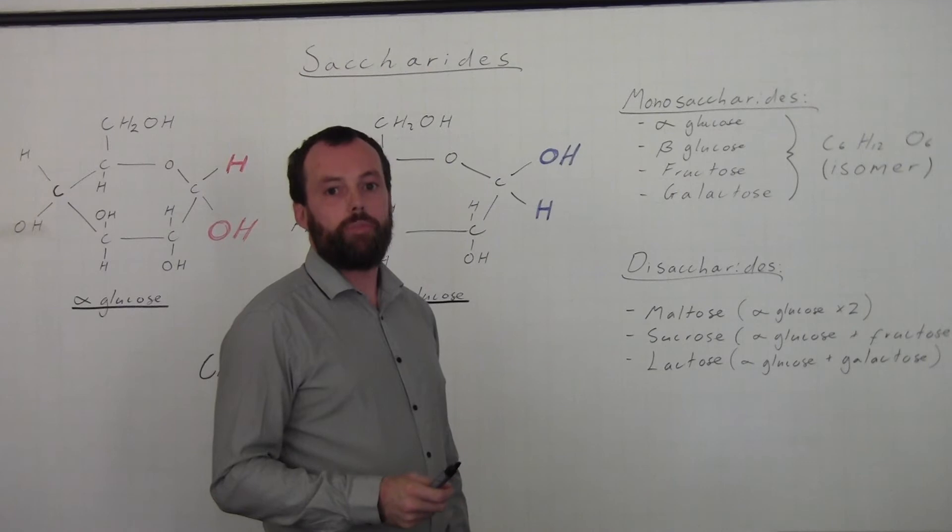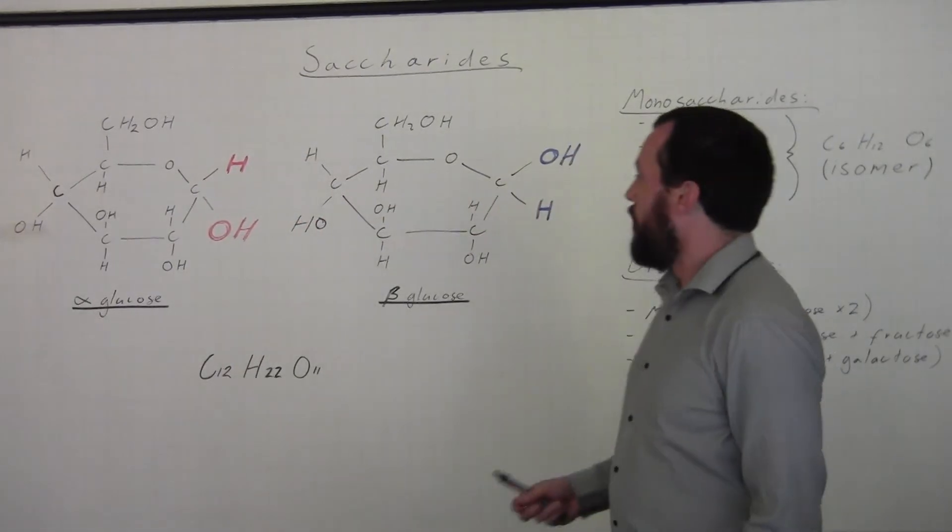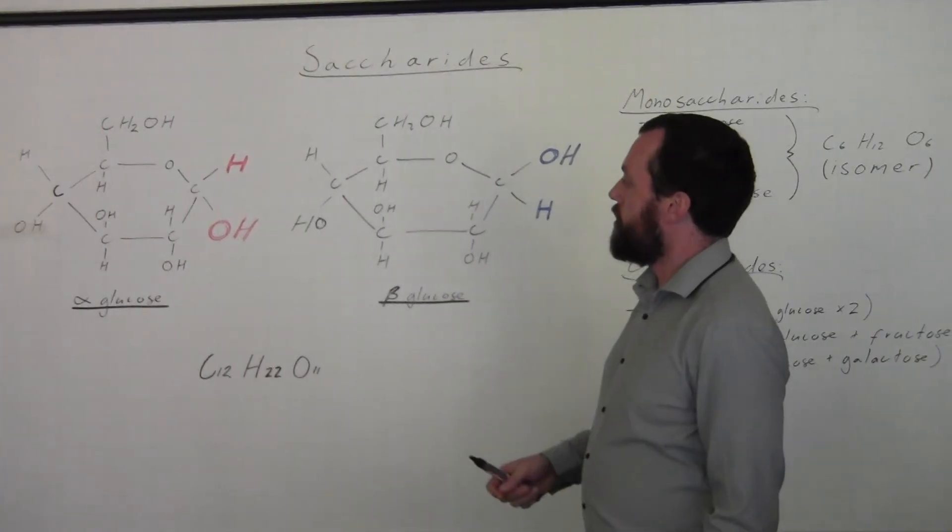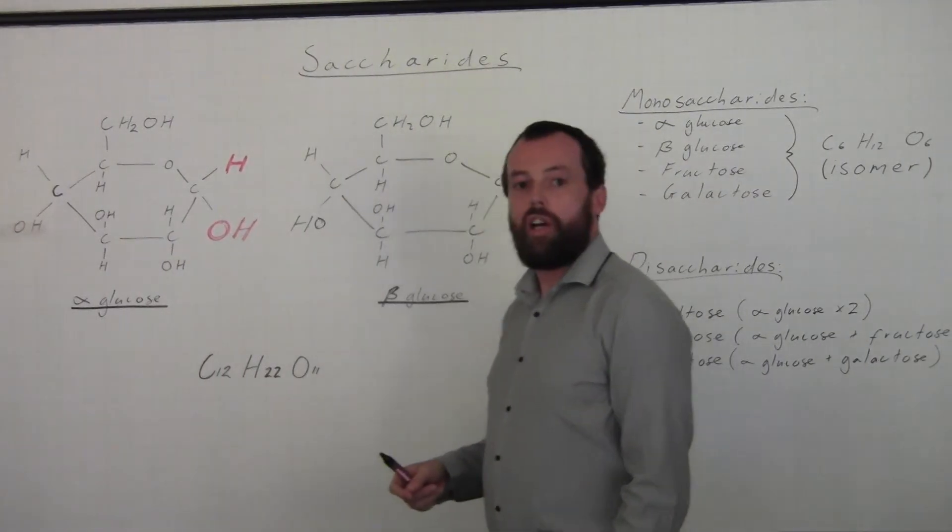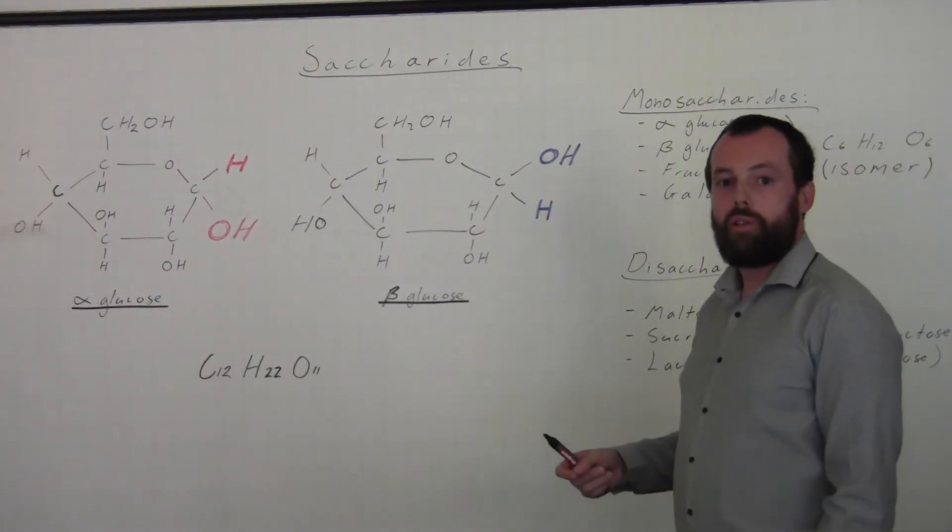So how do we join these monosaccharides together to form a disaccharide? Well, if we look at this diagram here, you can see that I've got the diagram of an alpha glucose and the diagram of a beta glucose.